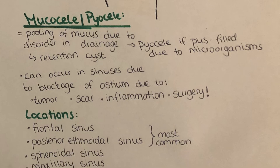Now, mucocele is the pooling of mucus due to a disorder in the drainage of the sinuses. This usually occurs because of a blockage of the ostium, caused by a tumor, scar formation after surgery, or inflammation. Pyocele is essentially the same, except that the mucus contains pus due to microorganisms found within the sinus cavities.